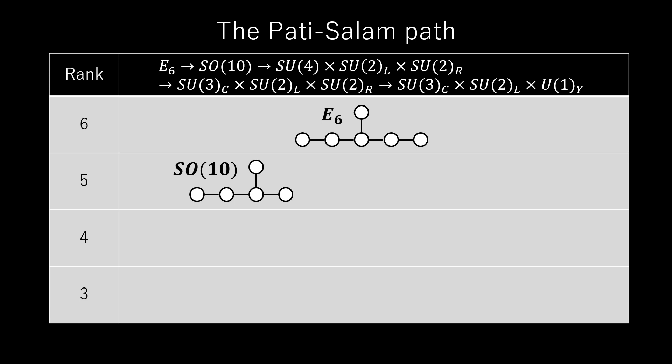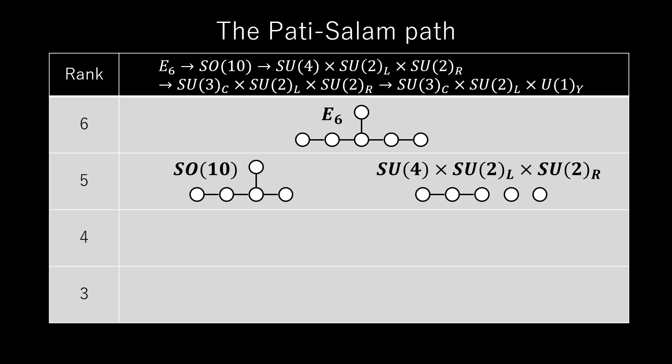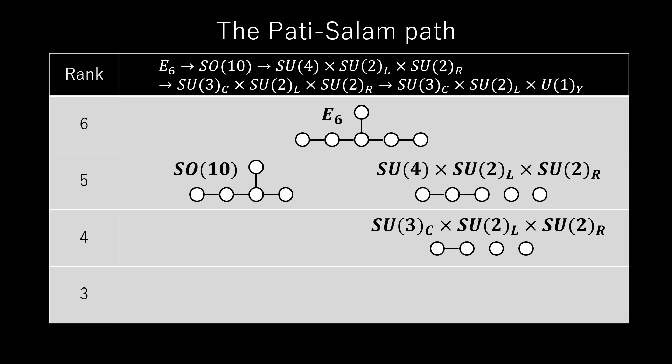The Pati-Salam path. Beginning with E6 and SO(10), extend to reach SU(4) × SU(2)L × SU(2)R. Remove to get SU(3)C × SU(2)L × SU(2)R, then remove to SU(5), and finally arrive at the Standard Model.